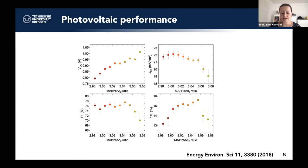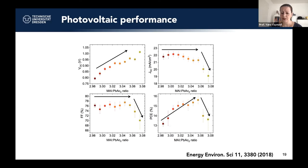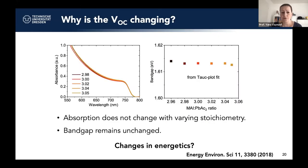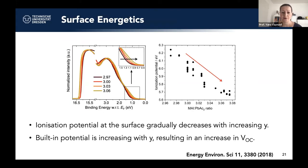We were surprised to find that even very minor variations in stoichiometry clearly affect photovoltaic performance. The VOC increases and the current is pretty flat across a certain range, then drops significantly in over-stoichiometric devices. The fill factor behaves similarly, and overall PCE increases to a slightly over-stoichiometric ratio and then decreases. To understand why the VOC is increasing, we checked whether small stoichiometry variations could change the band gap — but absorption measurements showed no change in band gap.